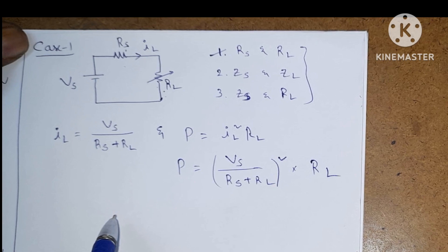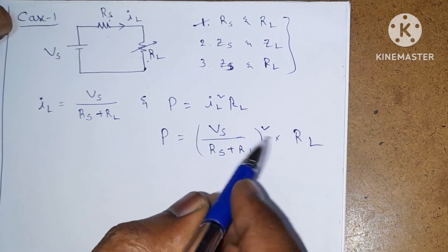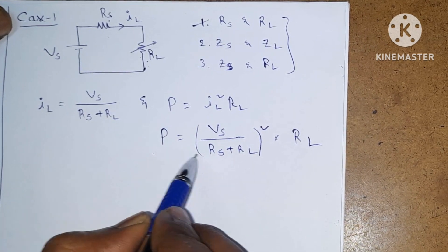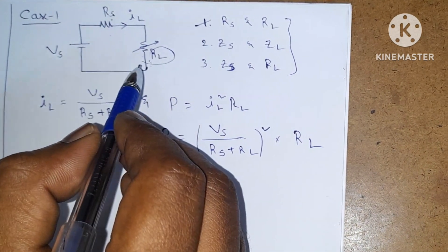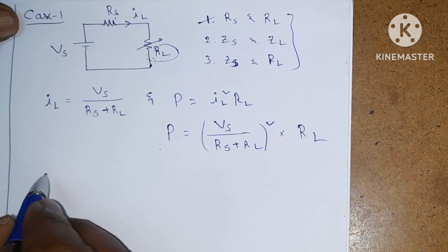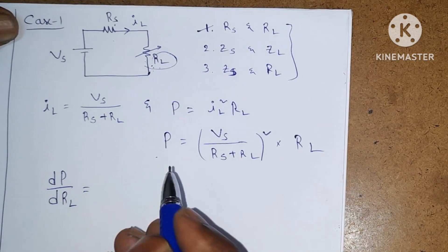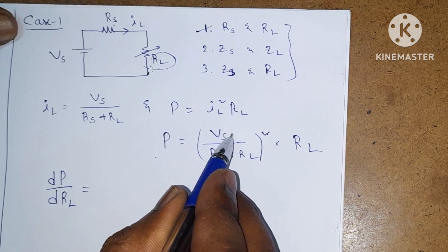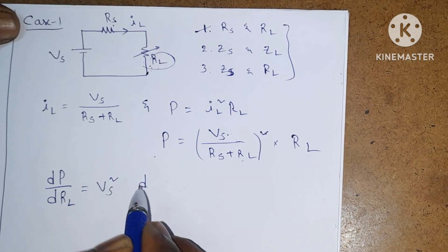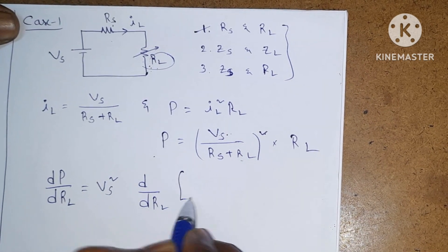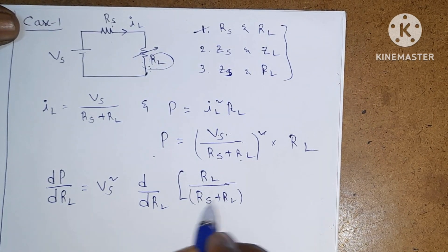To find the maximum value, we differentiate the function with respect to the variable and equate to zero. Here the function is power dissipated across load resistance, and the variable is load resistance Rl since it is varying. So we differentiate power with respect to Rl. Vs² is constant, so we take Vs² multiplied by d/dRl of Rl divided by (Rs + Rl)².